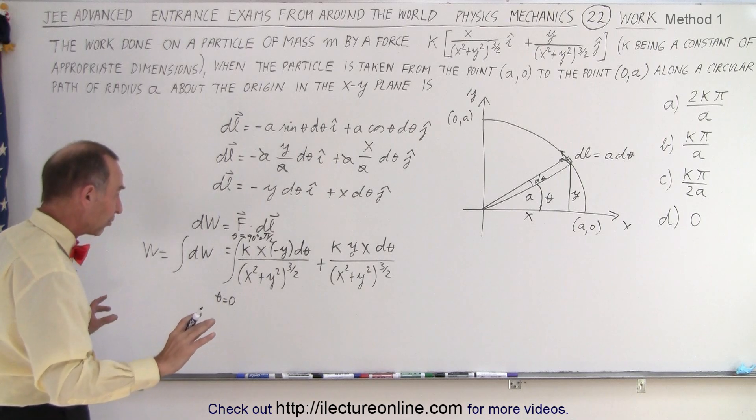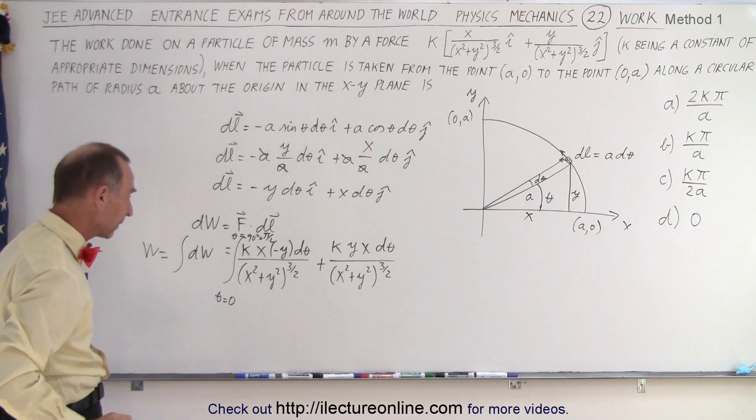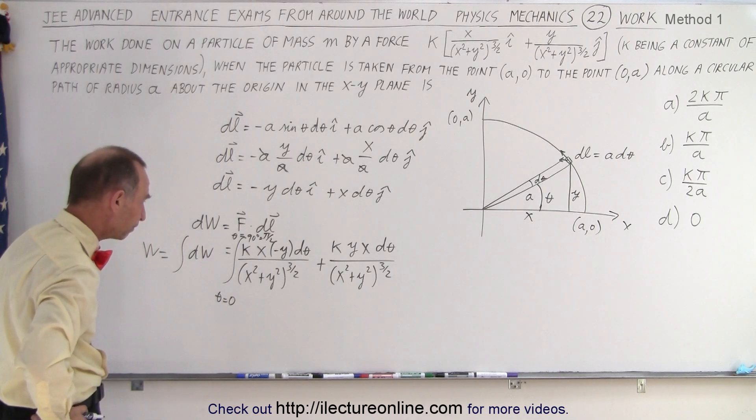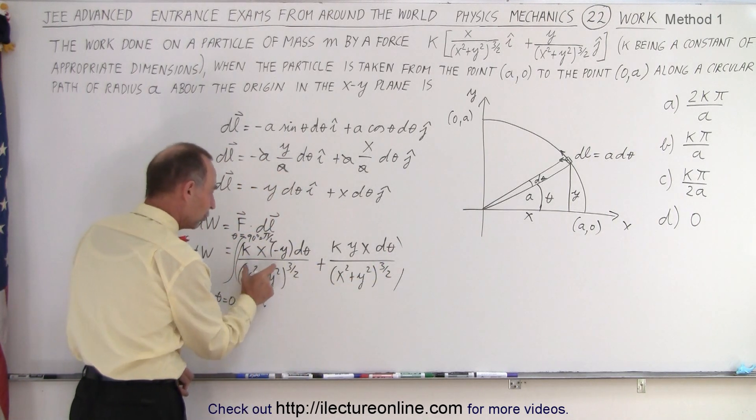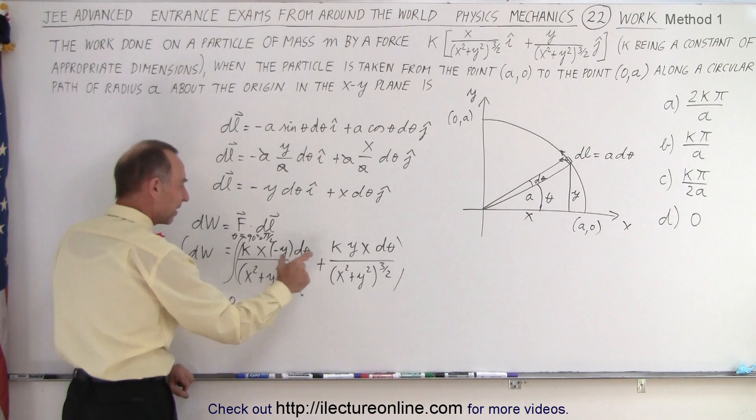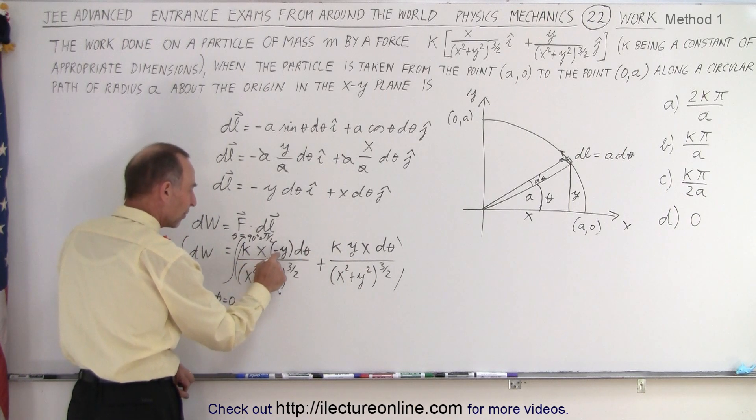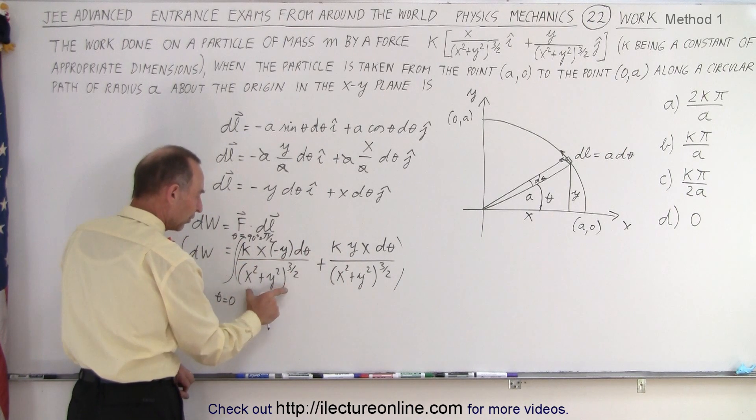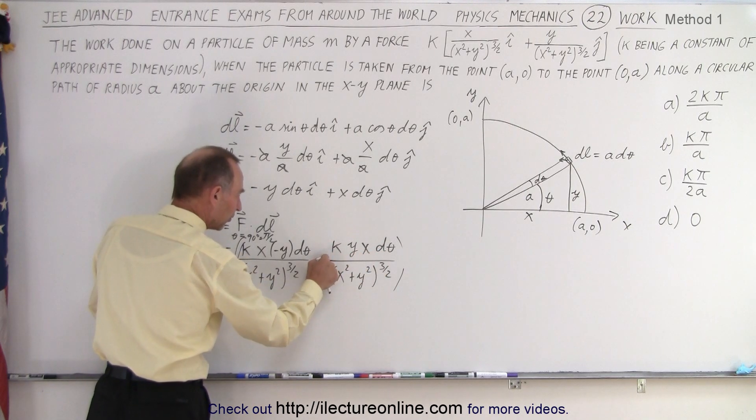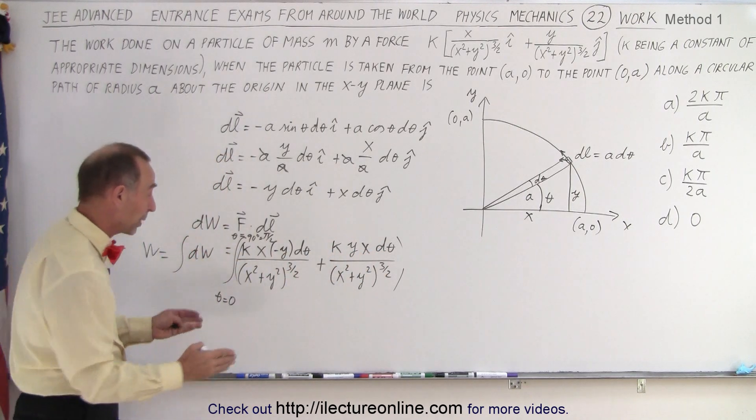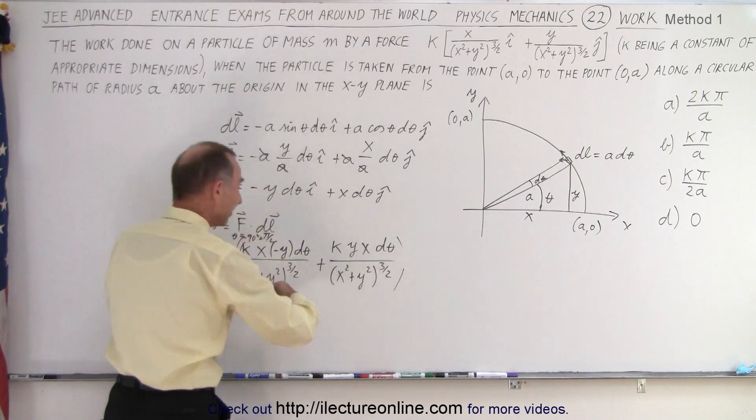before we actually try to do the integration, let's take a look. I probably won't put parentheses around it. Notice that these two components are exactly the same. This is KX minus Y d theta over the same denominator. This is KYX d theta, but this is plus, this is minus. So the only difference between this and this component is the sign, but everything about them is exactly the same.